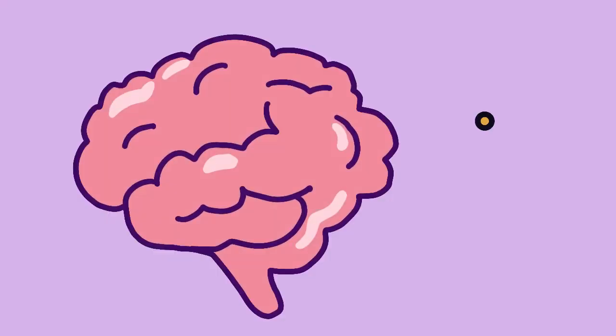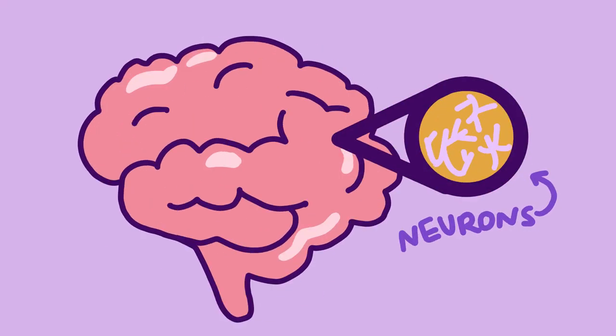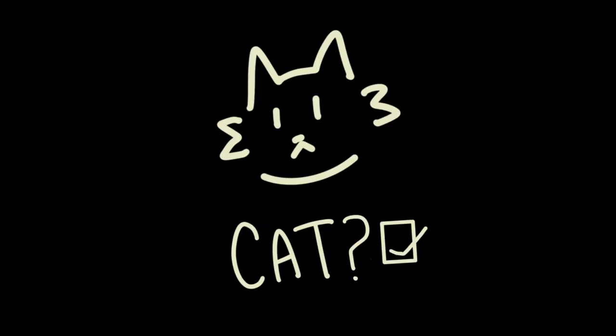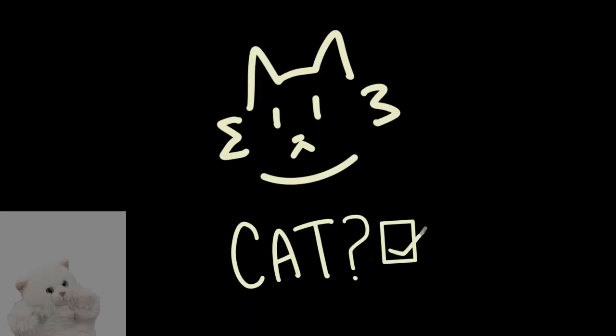Our brains use a biological neural network composed of hundreds of billions of neurons and the connections between them. These help us interpret the signals we receive if they can make decisions.